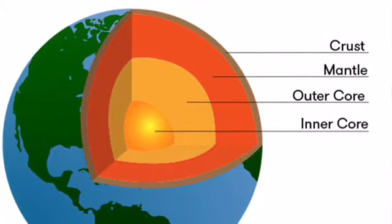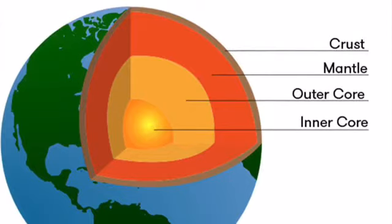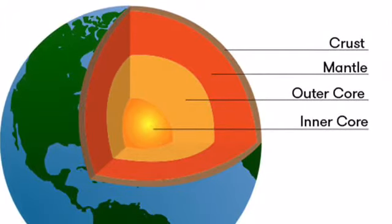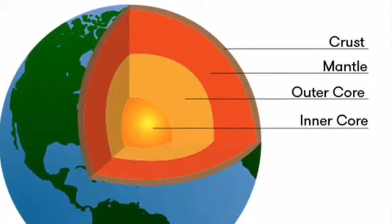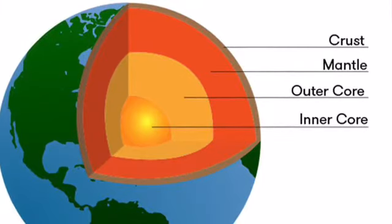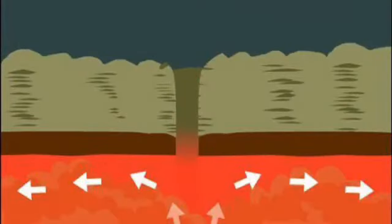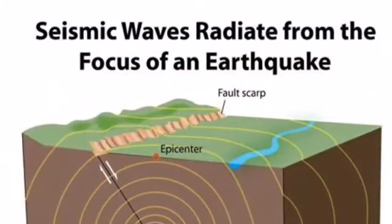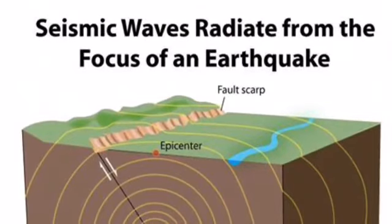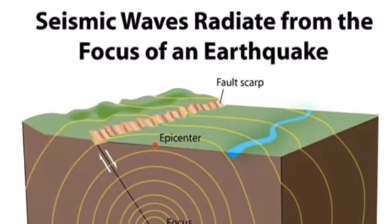The mantle consists of semi-solid rocks, iron, and other minerals. The innermost layer is the core, which is divided into two sections: the outer core and the inner core. The crust and upper layer of the earth are not in one piece — they are divided into many fragments called tectonic plates. These plates move continuously, and when they rub against or collide with each other, they cause a disturbance in the earth's crust, resulting in earthquakes, volcanic eruptions, or tsunamis.